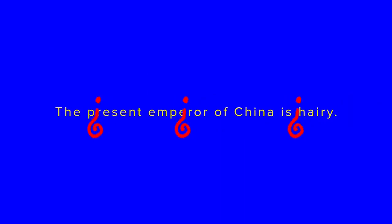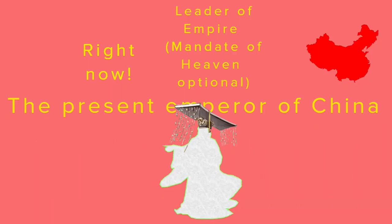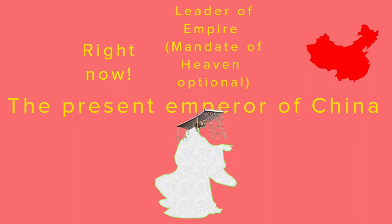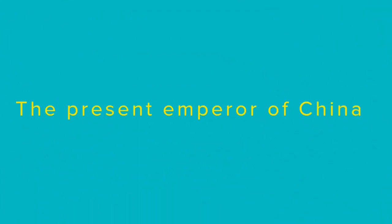If a statement isn't true or false, then it is meaningless or nonsense. But we do understand what is meant by 'the present emperor of China' — we can imagine what preconditions must exist for an individual to become the present emperor of China. Obviously, Frege's solution suffers from problems because it still violates the LEM, which you're really not supposed to do. Nor does it explain how we can have a sense of something, yet it not exist.